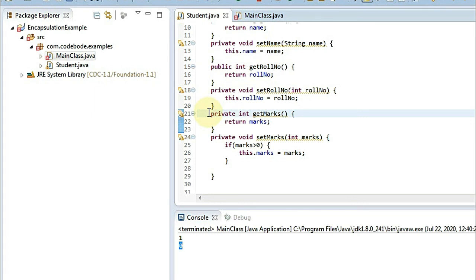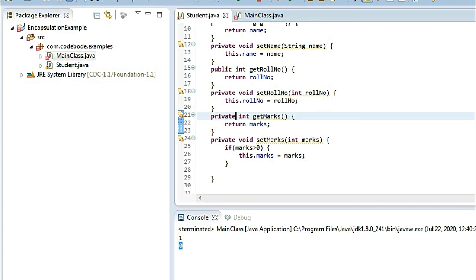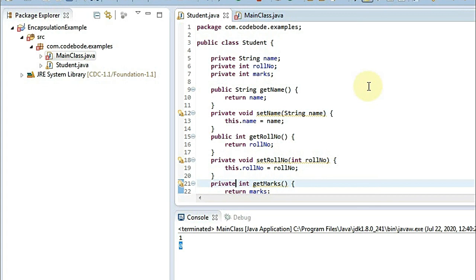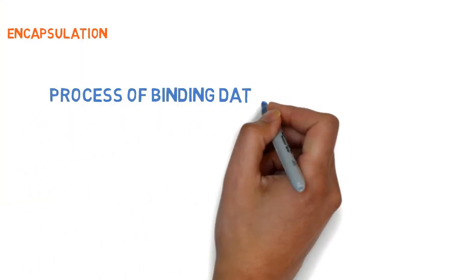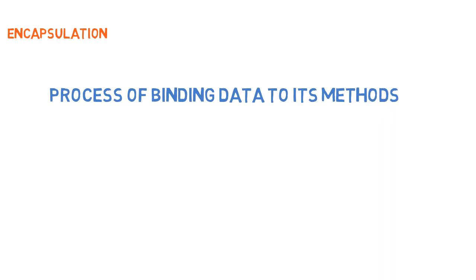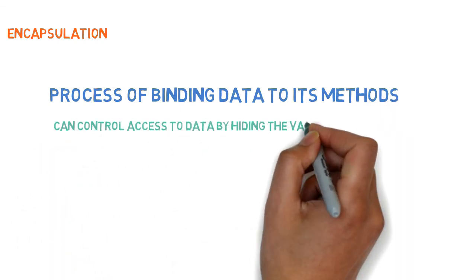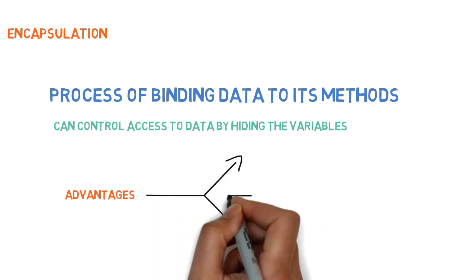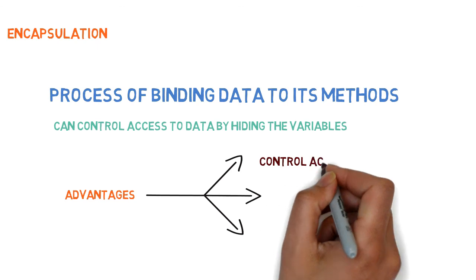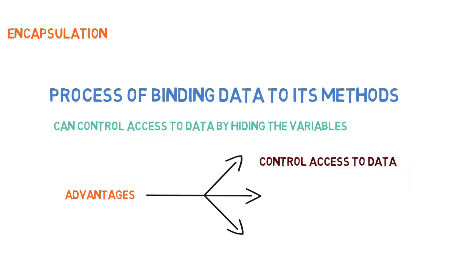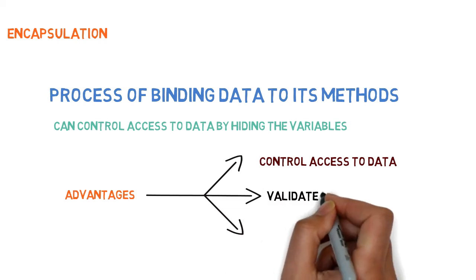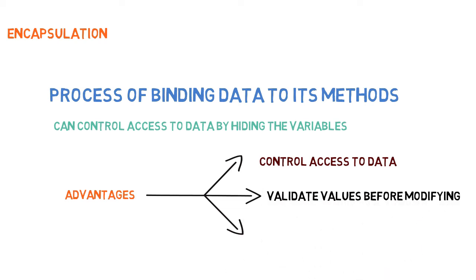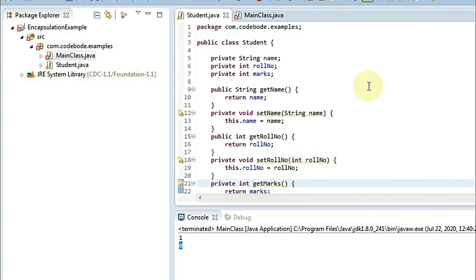Let's revise: encapsulation is a process of binding data to its variables so you can hide the variables from the outside world. There are three main advantages: first, you can control access to data; second, you can validate the data and prevent unwanted values from being set; and third, you can make the class read-only or write-only. These are the three major advantages of using encapsulation, which is why we have this principle in OOP.